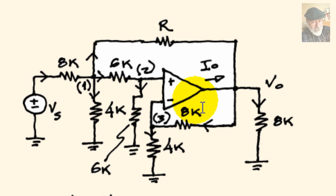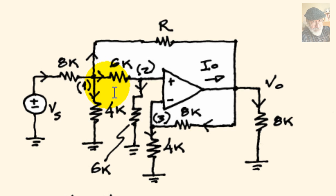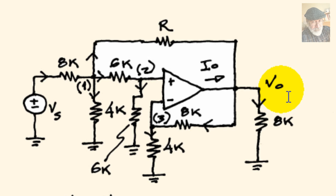This exercise is about an ideal op-amp, an input voltage source, and several resistors. We are to compute two things: what is the output voltage V0 of the whole setup, and what is the output current of the op-amp I0?